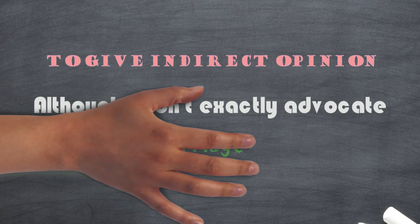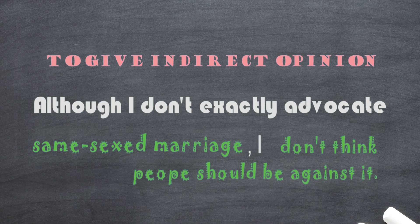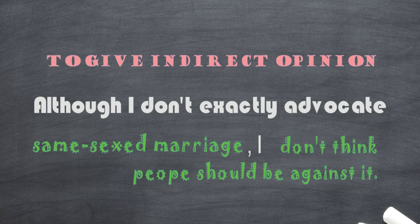Then, you can use a phrase, although I don't exactly advocate same-sex marriage, I don't think people should be against it. As you can see here, I have a dependent clause using although. Although I don't exactly advocate something, I still don't think blah blah blah. This is also a good way, in my opinion, to express your idea in IELTS speaking part 3.